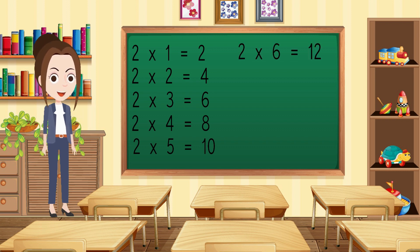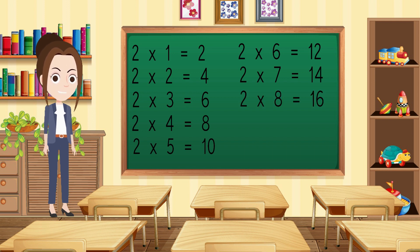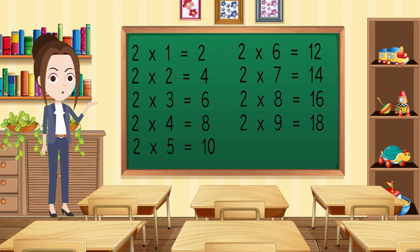2 6s are 12, 2 7s are 14, 2 8s are 16, 2 9s are 18, 2 10s are 20.